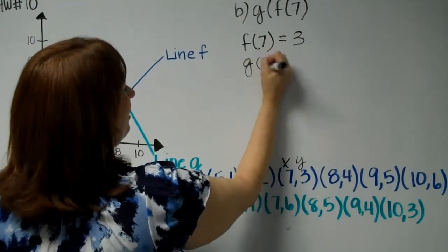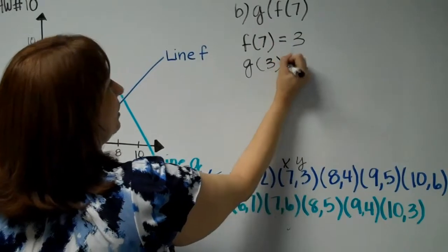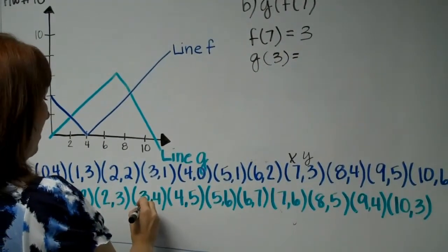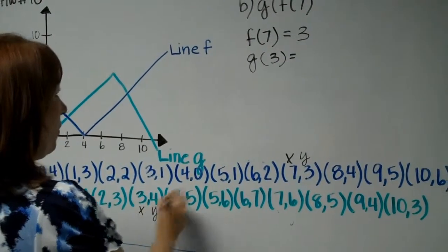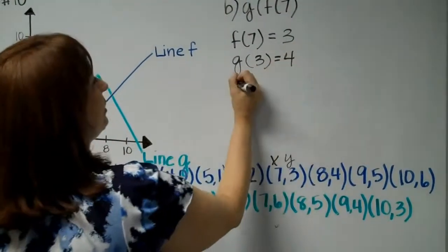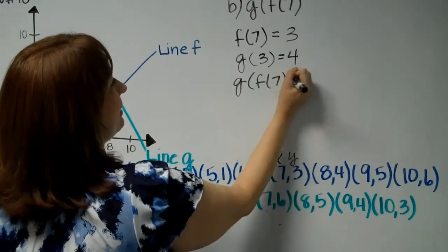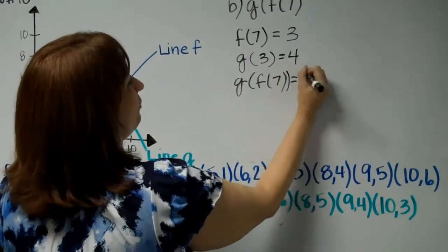So what is G of 3? Go down to line G. Your X coordinate is 3, so your Y coordinate is 4. Therefore, G of F of 7 equals 4.